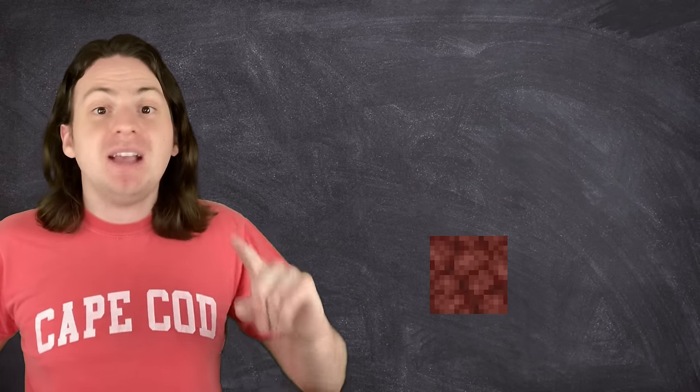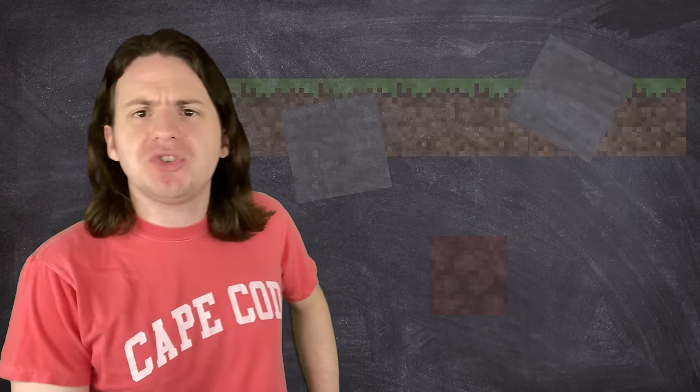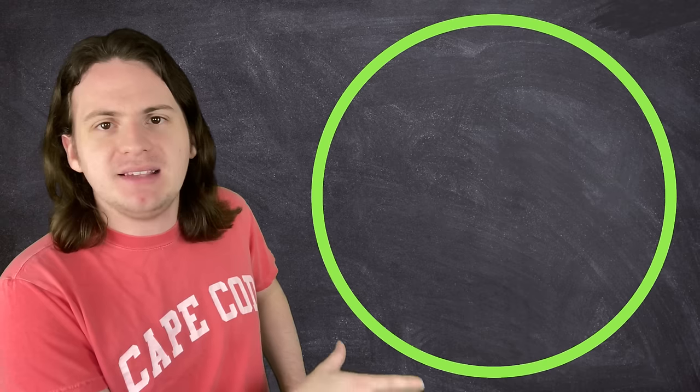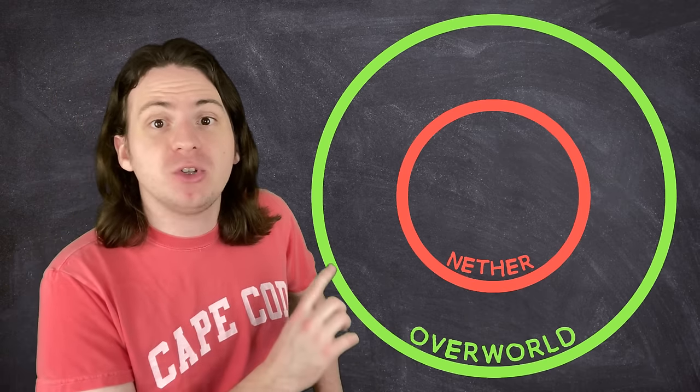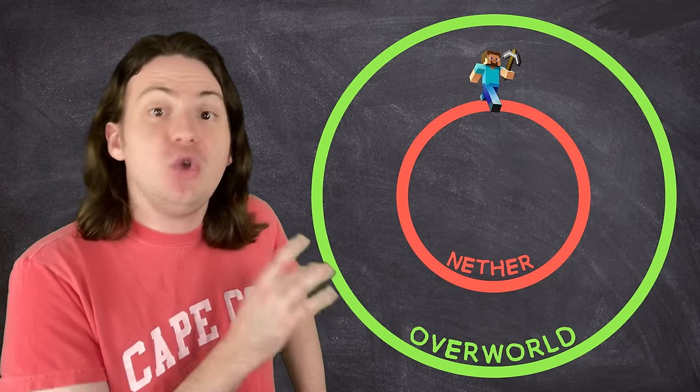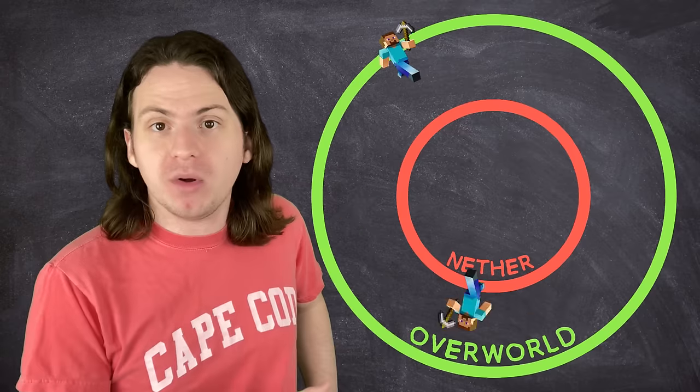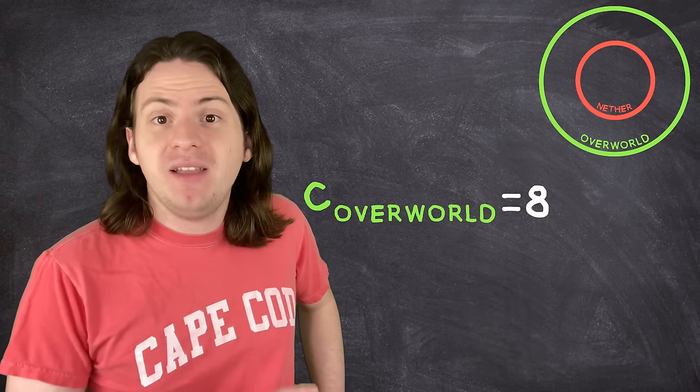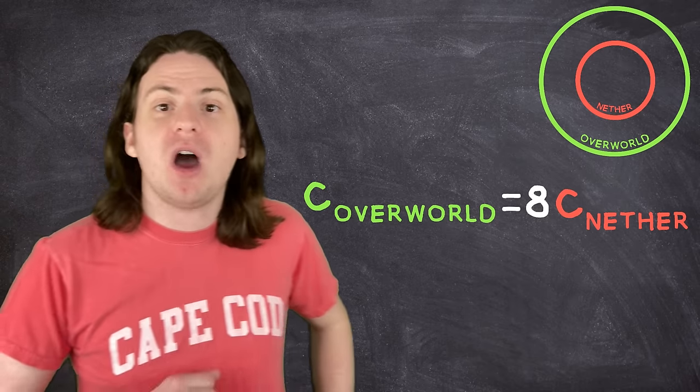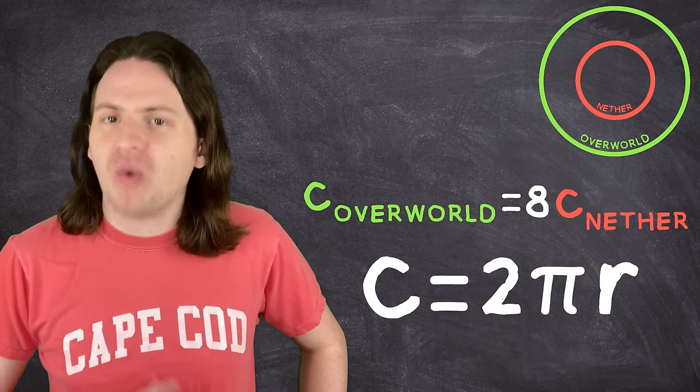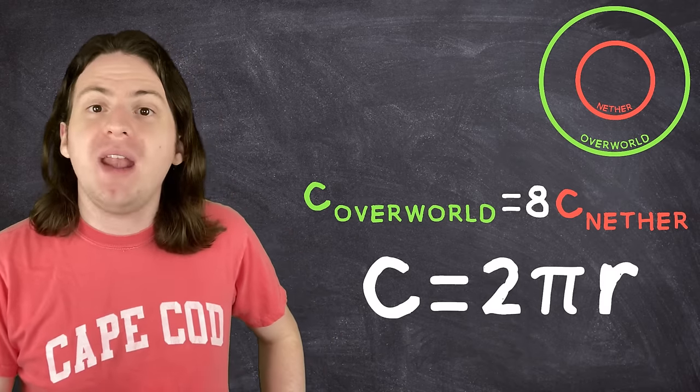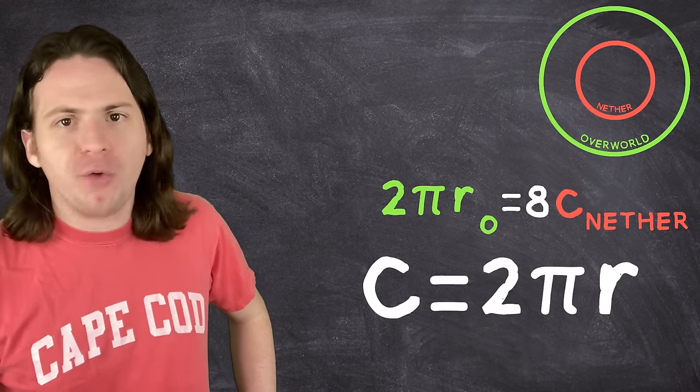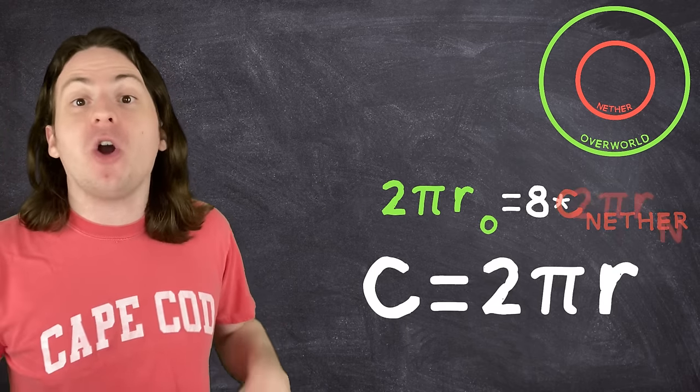So now that we've got our assumptions down, it's time to start actually solving. Let's break down the problem. We know that one block in the nether is equal to eight blocks in the overworld. Looking at just a cross-section of the world to make our jobs easier, this outer ring is the overworld, and the inner ring is the nether below it. If you traveled all the way around the nether, back to where you started, you would have traveled eight times further in the overworld. That means that the circumference of the overworld would be eight times longer than the circumference of the nether. The formula for the circumference of a circle is two times pi times the radius. That's the distance from the center to the edge of a circle. We'll call the radius of the overworld R-O, R for radius, O for overworld, and we'll call the radius for the nether R-N for nether.